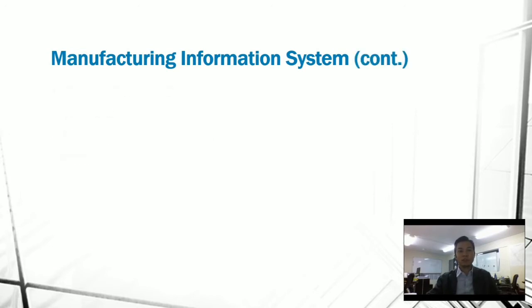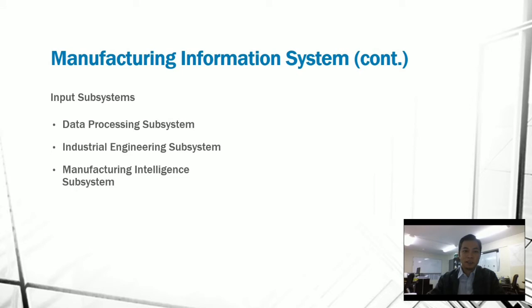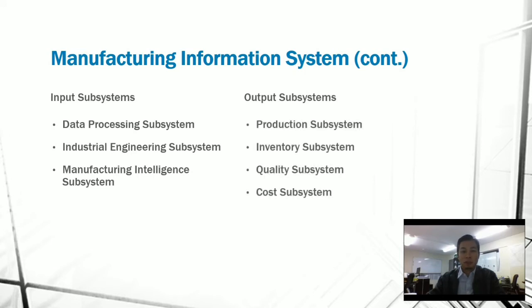A manufacturing information system has input and output subsystems. The input subsystems are composed of data processing, industrial engineering, and manufacturing intelligence. On the other hand, output subsystems consist of production, inventory, quality, and cost. Let's discuss these subsystems one by one.